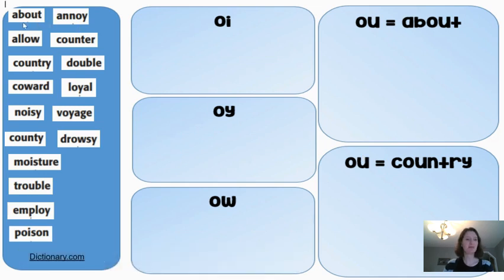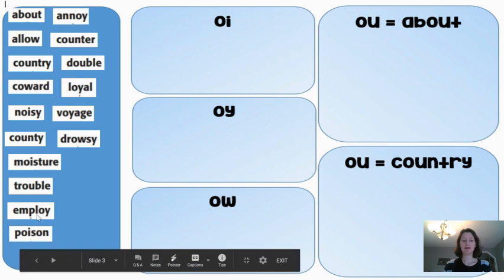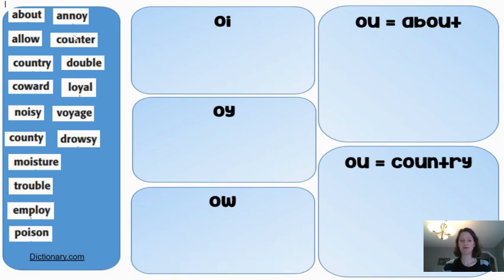Let me read through the words for day one: about, allow, country, coward, noisy, county, moisture, trouble, employ, poison, annoy, counter, double, loyal, voyage, or drowsy. Those are your day one words to sort.